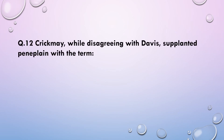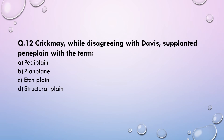Next question: Crickmay, while disagreeing with Davis, supplemented the peniplain with the term — (a) periplane, (b) pan plane, (c) H plane, or (d) structure plane. The correct answer is pan plane.